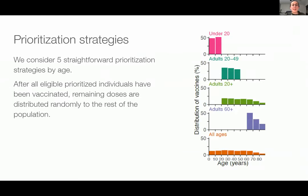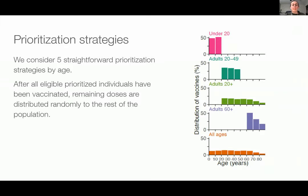The prioritization strategies we chose were really just five straightforward options. We did this based on who the vaccine may be approved for and what is logistically most feasible. You can see those five options: under 20, adults 20 to 49, all adults 20 plus, strictly older adults, and then all ages — which is really no prioritization by age, so it's just uniformly at random.